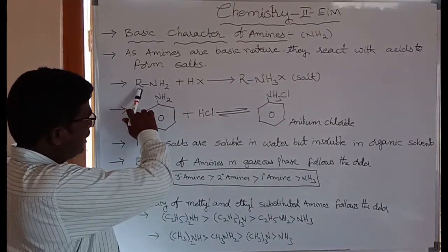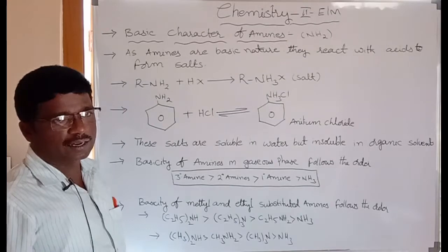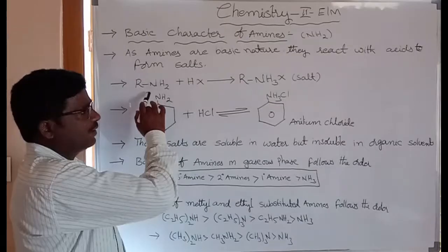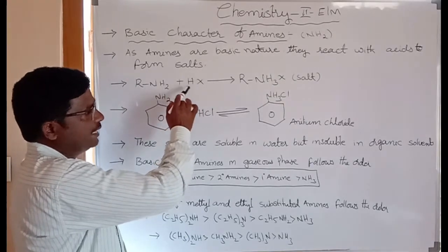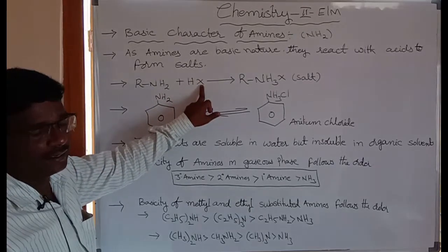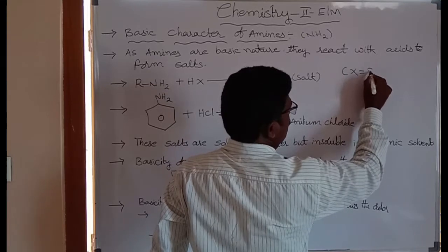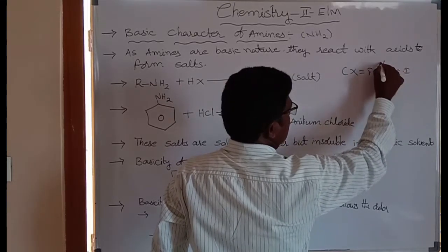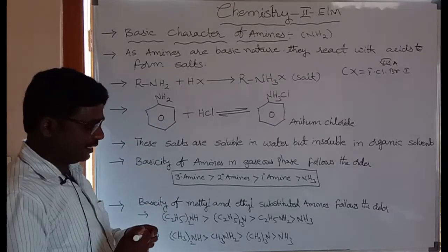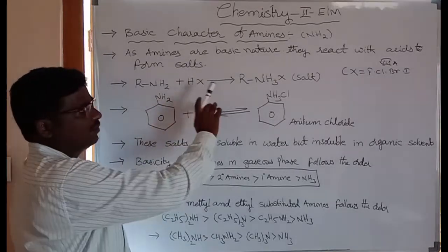Here is R-NH2, also known as an aliphatic amine. Aliphatic means the R group is any chain group or methyl group. The aliphatic amine reacts or is treated with an acid — also known as HX. HX is a hydrogen halide, a Group 7A element: fluorine, chlorine, bromine, and iodine. So the primary aliphatic amine reacts with hydrogen halide to form salts.